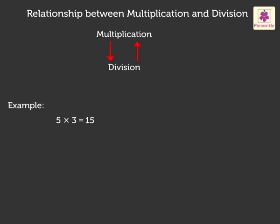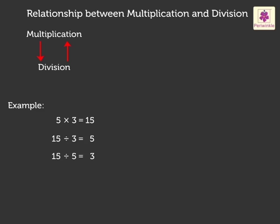Now, let us look at it in another way. Divide 15 by factor 3 to find the quotient, which is equal to 5. Now, divide 15 by factor 5 to find the quotient, which is equal to 3. This tells us an interesting fact. Division is the inverse of multiplication. That is, when we divide the product with one of its factors, the quotient that we get is the other factor.